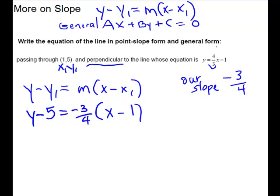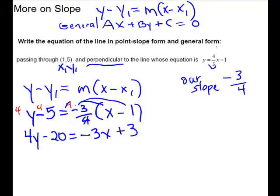We're going to clear the fraction. The common denominator is 4, so multiply across by 4. That gives us 4y minus 20 equals negative 3 distributed — giving negative 3x — and be careful, that also gives us a positive 3. Now moving to general form: since x is negative I'd rather have it positive, so I'll add 3x, put it in front, keep y here, and subtract 3. Those are like signs so they add and keep the sign, giving 0 on the right-hand side. So this is general form.